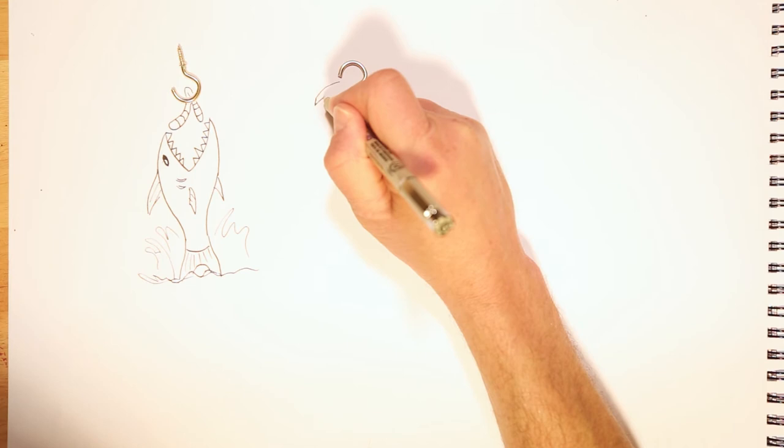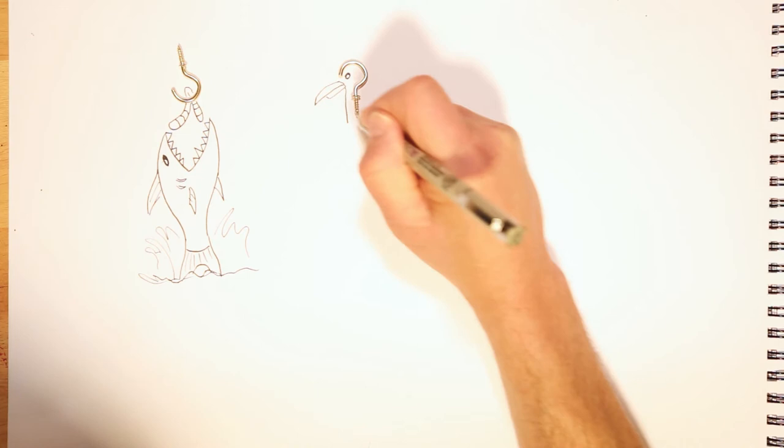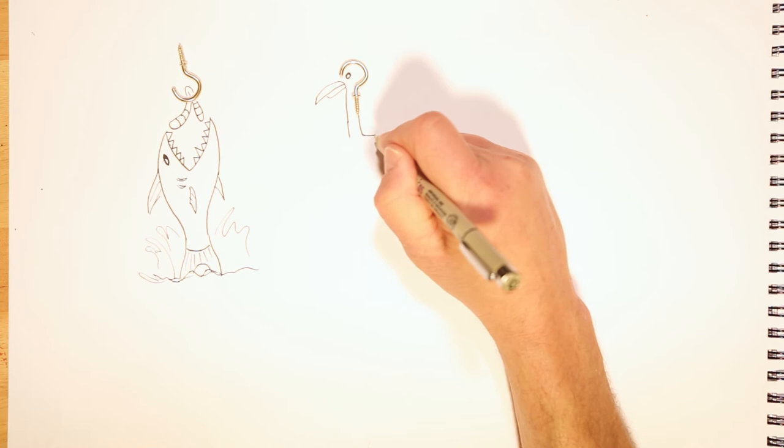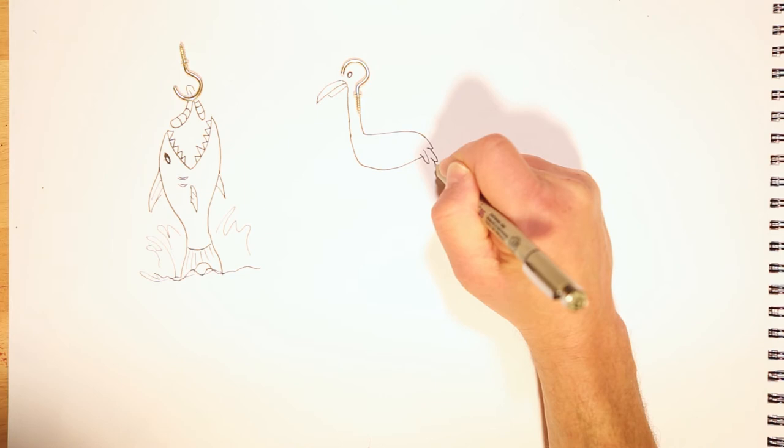So here we have the head, you get the neck drawn. Remember, flamingos are kind of tall birds, and they have very skinny legs. The beak is coming off the end, and the wings.